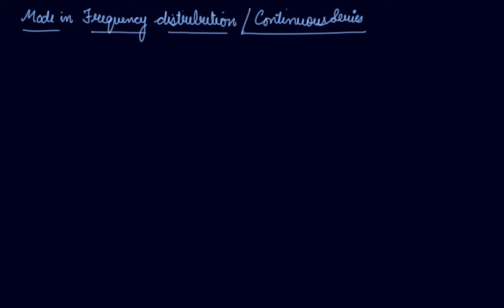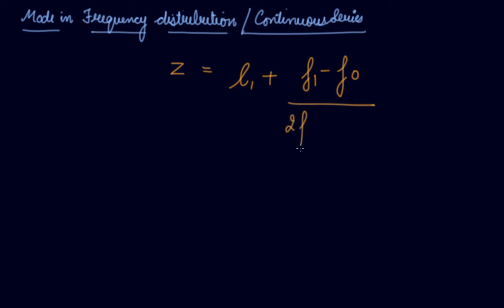In this video we will be studying the mode in frequency distribution for the continuous series. In a continuous series you are given class intervals. The formula is Z (mode) equals L1, the lower limit of the modal class, plus F1 minus F0 divided by 2F1 minus F0 minus F2, into i, which is the class interval or size of the modal class.